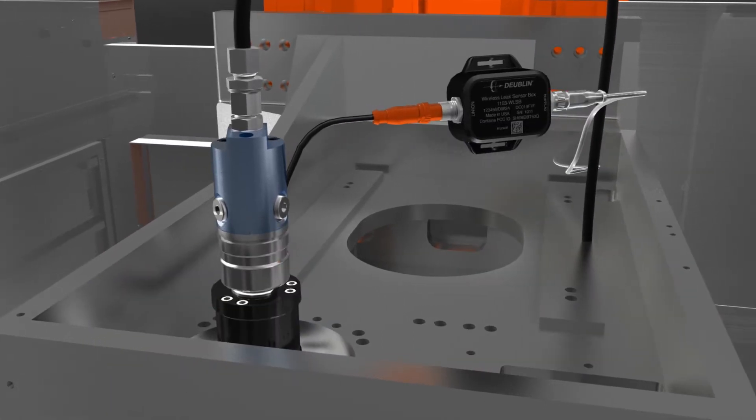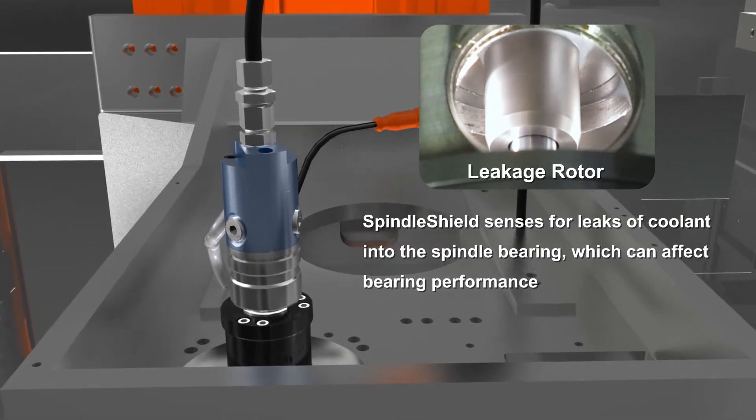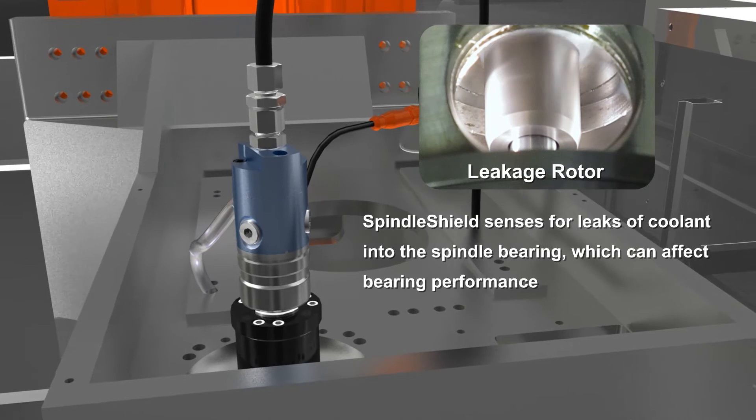So Spindle Shield instead senses for leaks of coolant into the spindle bearing, which can affect bearing performance and therefore the transmission or motor.